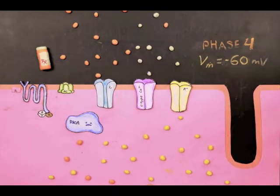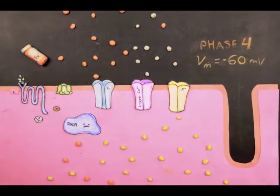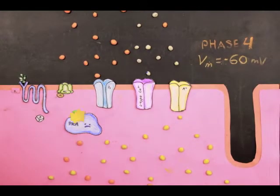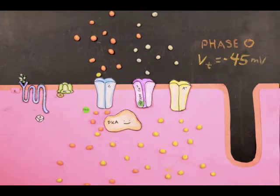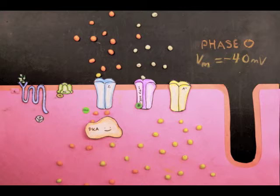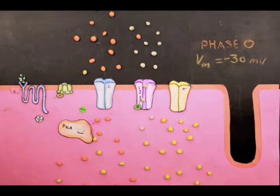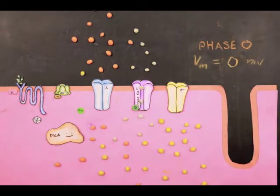With isoproteranol, the activation of PKA through the beta-1 receptor results in the phosphorylation of the L-type calcium channel. This allows the L-type calcium channel to open earlier, meaning the threshold of the membrane decreases, and the membrane depolarizes at a faster rate, or an increase in the slope of phase 0.